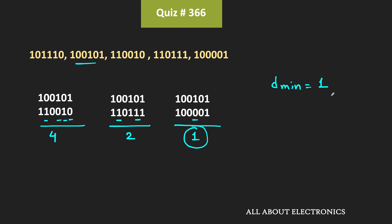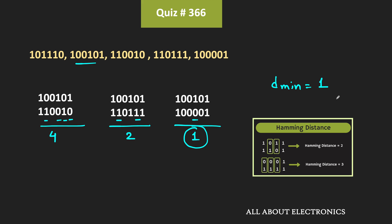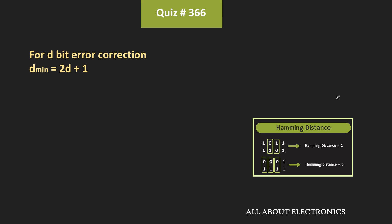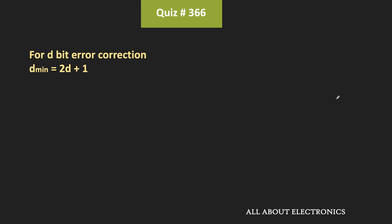With this minimum Hamming distance we can find how many errors this code can correct. For d-bit error correction, the minimum Hamming distance must be equal to 2d + 1. That means to correct 1 bit of error, the required minimum Hamming distance is 3. But since d_min is equal to 1, this code cannot correct any error — d is equal to 0.